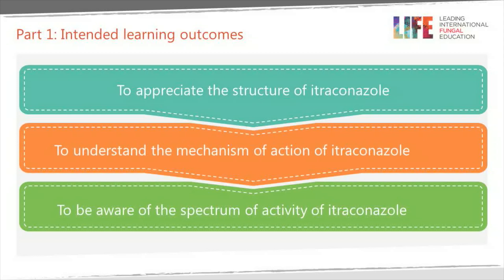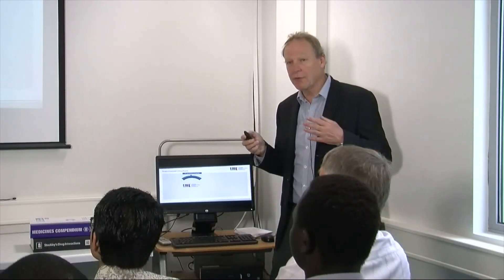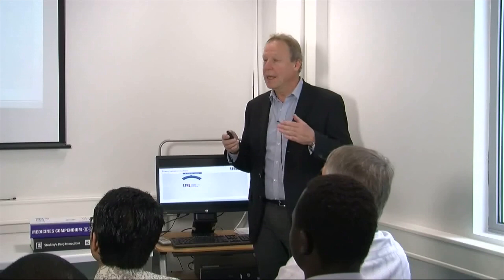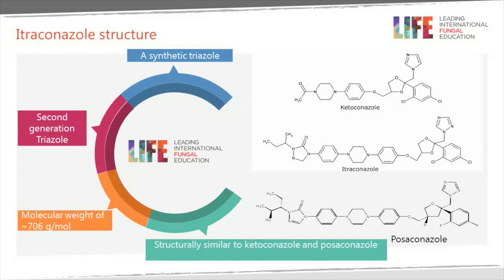We're going to look at the structure of itraconazole, how it works as a drug — which is similar to all the other azoles — and the spectrum of activity. Itraconazole is a synthetic triazole. Ketoconazole and miconazole were precursors. It's a long structure, similar to ketoconazole and posaconazole but different in various side chains. It's about 705 in molecular weight, making it a fairly large drug — classified as a second-generation triazole.